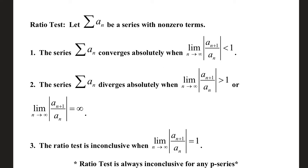The series diverges whenever the limit is greater than one or infinite. And number three, the ratio test is inconclusive when that limit is equal to one.